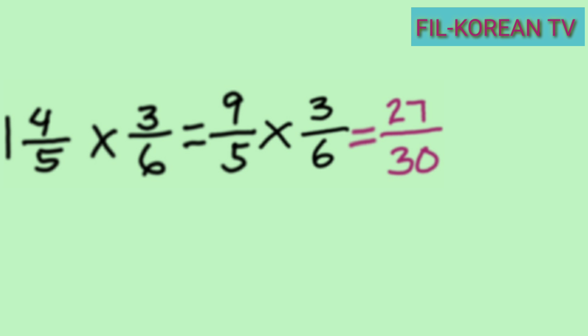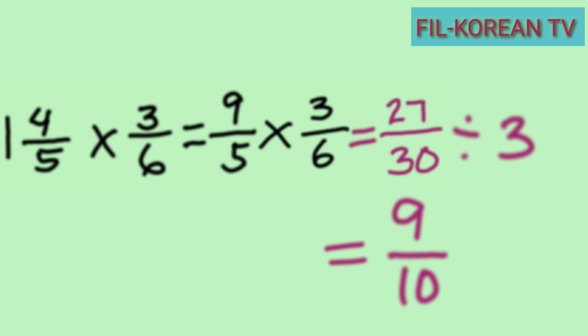We can reduce this fraction to lowest terms because the numerator and denominator have a common factor other than one, so we divide by their GCF. The GCF of 27 and 30 is 3. Twenty-seven divided by three equals nine, and thirty divided by three equals ten. The final answer is nine-tenths.